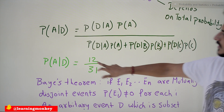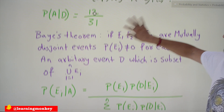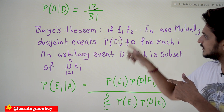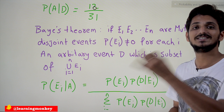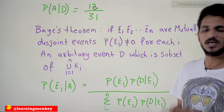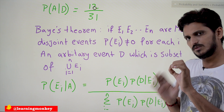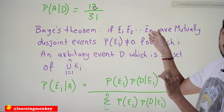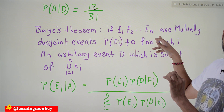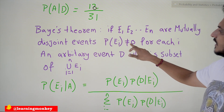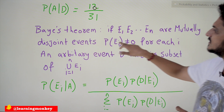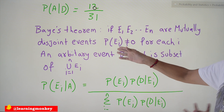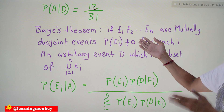Now understand the definition of Bayes theorem. If E1, E2, ..., EN are mutually disjoint events — in our example these are machines A, B, C, which are mutually exclusive events — if you pick a bolt from the market it may be from machine A, B, or C. The condition is that probability of Ei must not equal zero for each i.